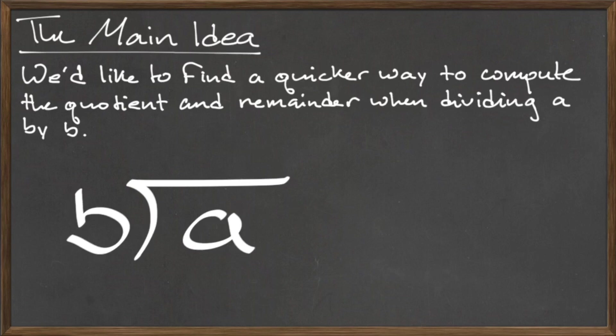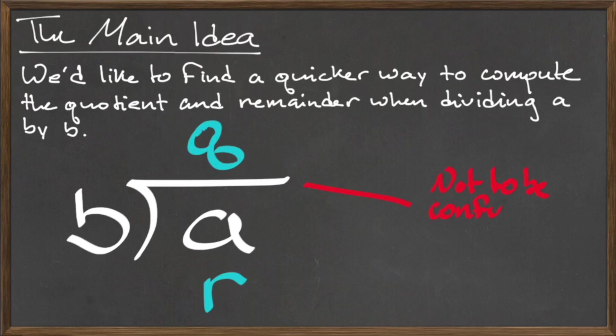A quicker method is to use the process of long division, which we denote in the following way. We place the number that we are dividing, a, inside of the special long division symbol, and place the number that we are dividing by, b, on the outside. We place the quotient on top of this division symbol, and we place the remainder at the bottom underneath the variable a. Be careful not to confuse the long division symbol with the radical symbol, which we use to compute square roots. They look similar, but have two very different implications.